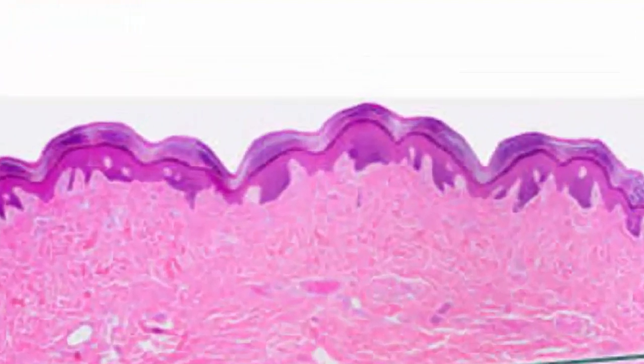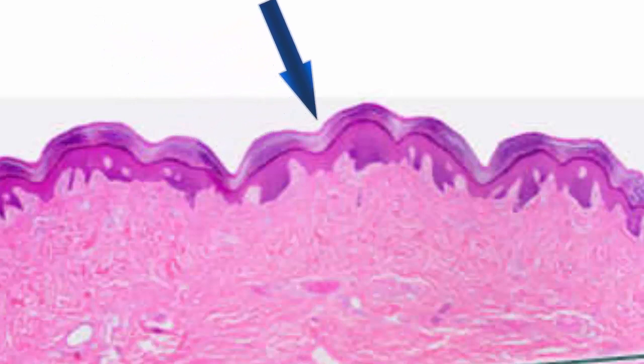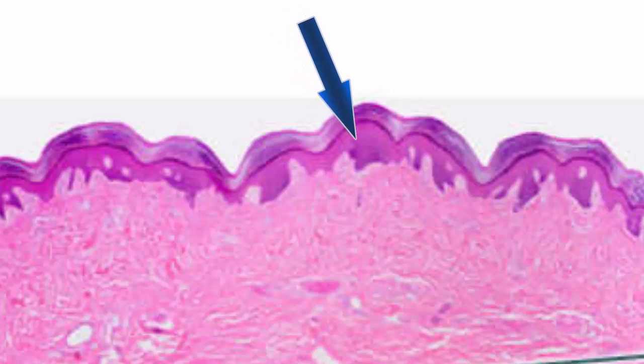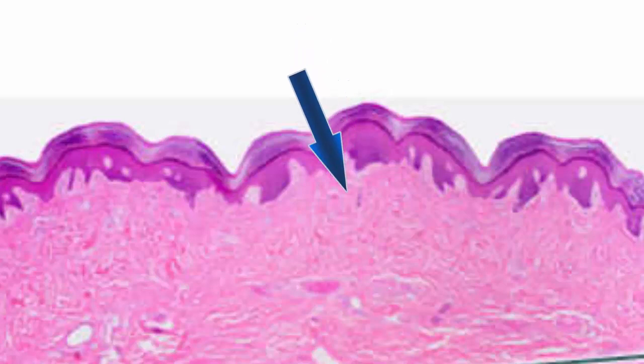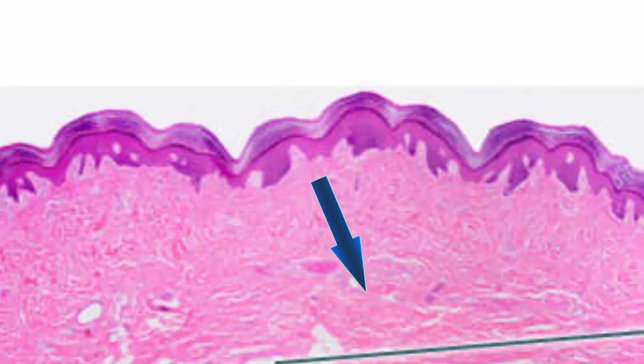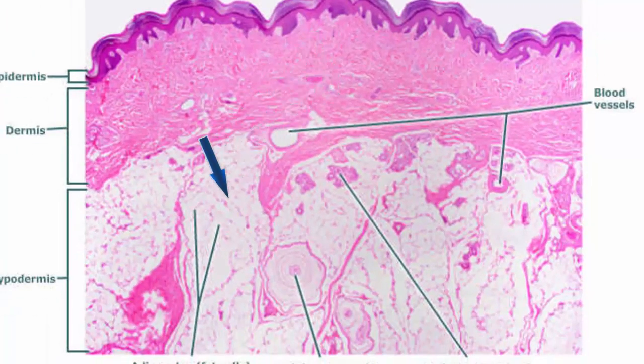Taking a look at the epidermis a bit more closely, we see it has this wavy appearance and two very distinct areas that we will look at in more detail in a close-up slide. In contrast to the epidermis is the dermis, which also has two different areas that we will look at in detail in another slide. And finally we see the hypodermis, which is also known as the subcutaneous tissue.